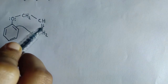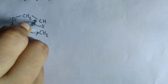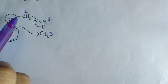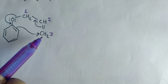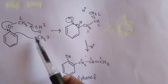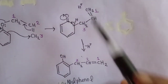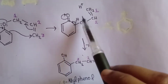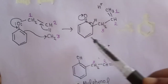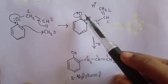Let us go through the mechanism of Claisen rearrangement. This double bond will make a bond with this carbon. Now this carbon has a filled valence, and this double bond shifts. Suppose this is carbon number one, this is carbon number two, and this is carbon number three. We get the third carbon attached to the ortho position, and the remaining CH=CH2 has a hydrogen atom that goes to form an H+ ion.